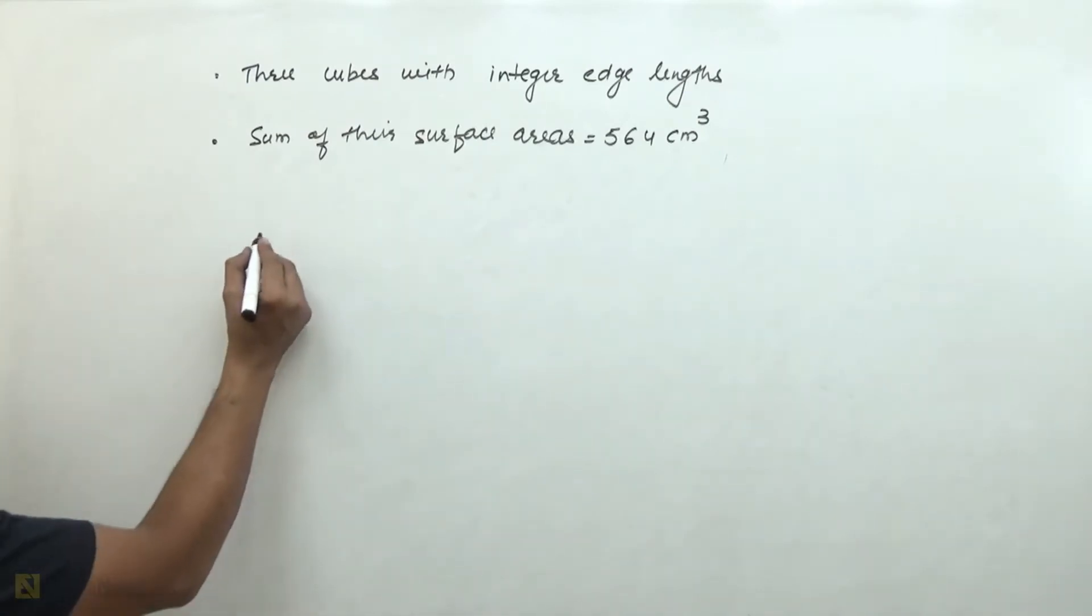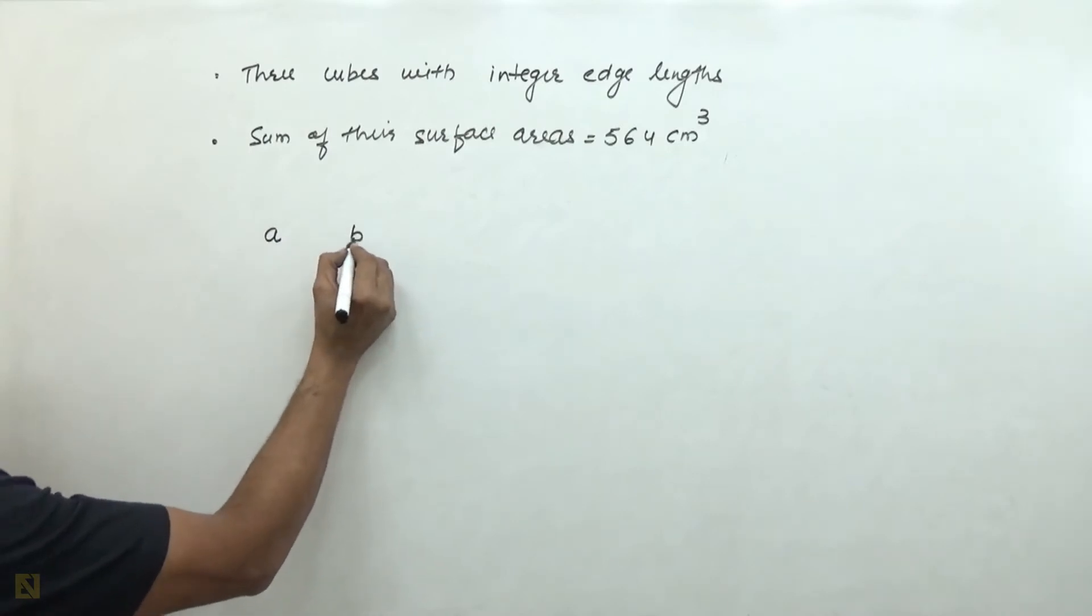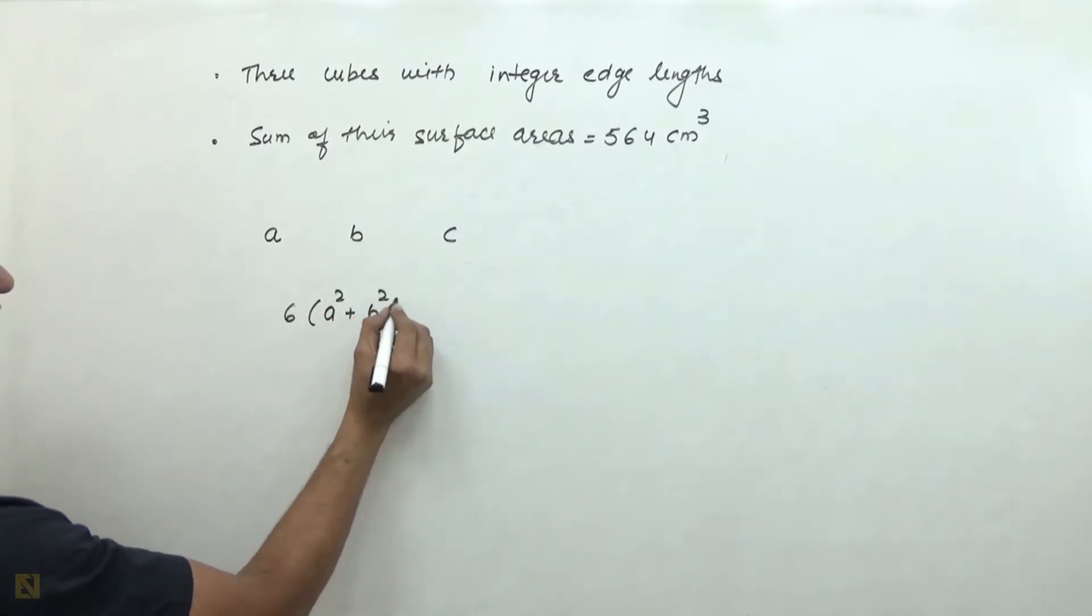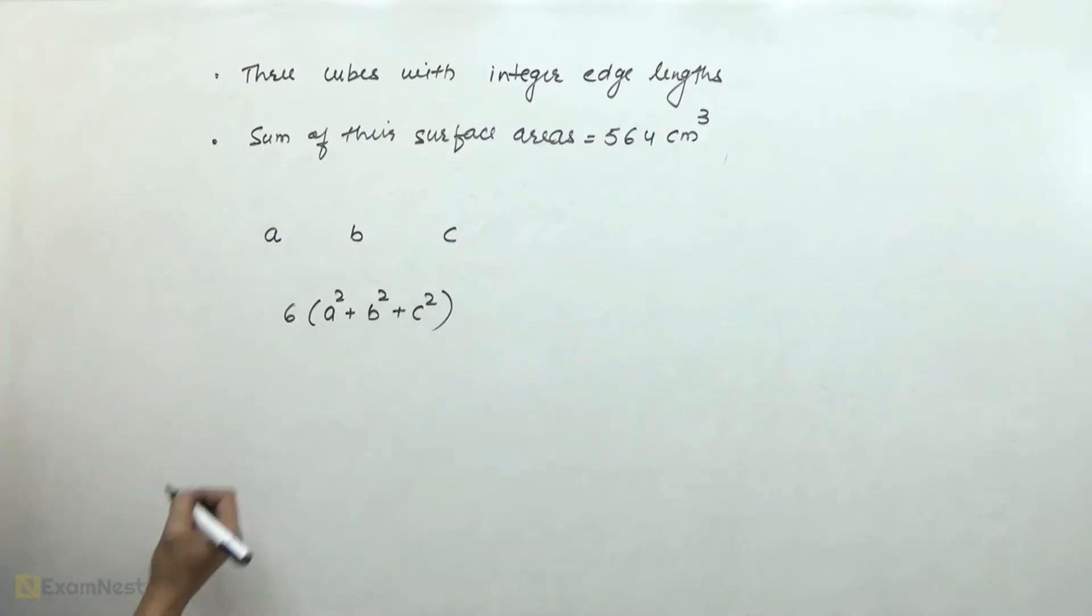We have three cubes in which one side is A, one side is B, and one side is C, and these three are positive integers. If we have to find the sum of the surface area, then it will be 6(A² + B² + C²).